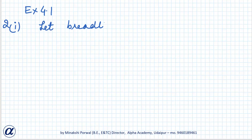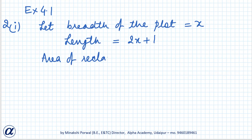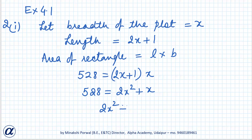Let the breadth of the plot equal x. Since the length is 1 more than twice the breadth, the length equals 2x plus 1. The area of a rectangle is length into breadth, and the area is 528. So: 528 equals (2x plus 1) into x, which gives 2x² plus x. Rearranging: 2x² plus x minus 528 equals 0.